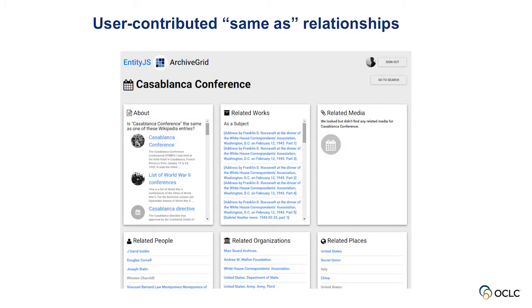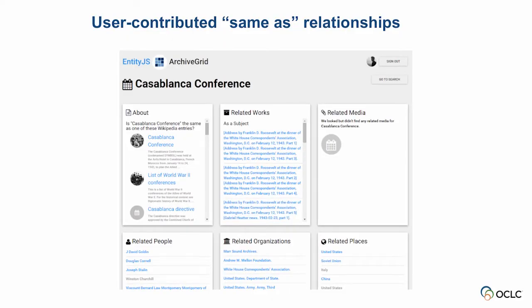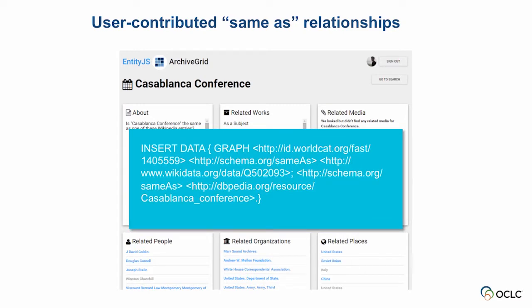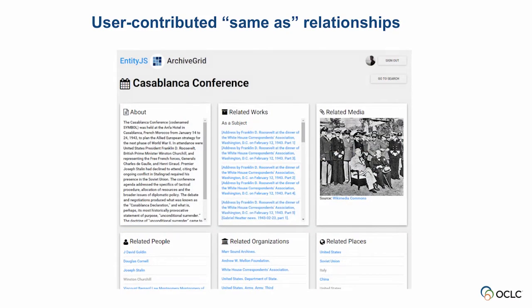The last thing we've done is, for some of our entities we don't have links out to Wikipedia. For example, this Casablanca conference — a FAST heading — doesn't have a link. So what we actually added was an API that makes a call out to Wikipedia, and then we can ask the user: we don't really have any other information about this thing other than its name and what it's related to — is this Casablanca conference the same as any of these Wikipedia things? The user can then click on any of those items, and as soon as they do that, we put back into our dataset feedback loop a relationship saying that this person has said this FAST topic is the same as this other thing. The page then automatically updates — it goes out and grabs the description, grabs images, and from there we can put that back in the pipeline.